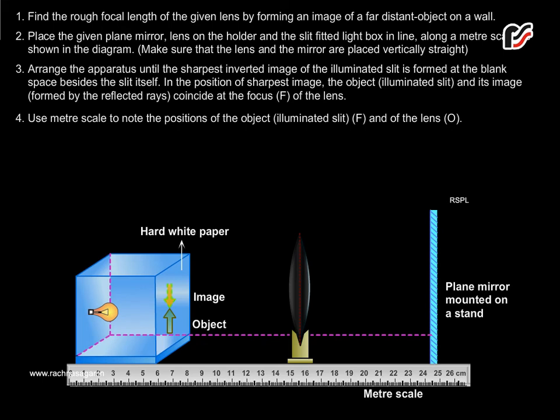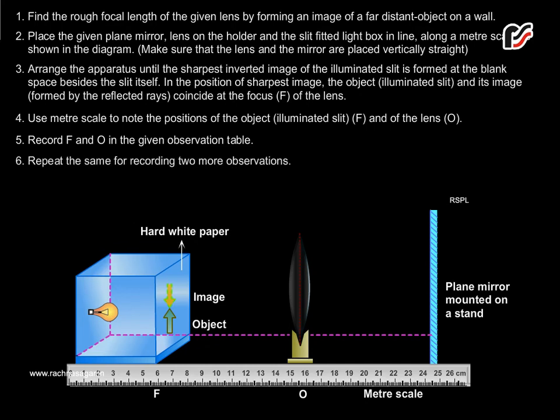Use meter scale to note the positions of the object F and of the lens O. Record F and O in the given observation table. Repeat the same for recording two more observations.